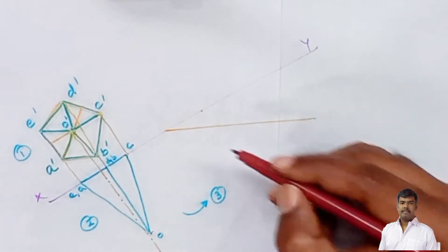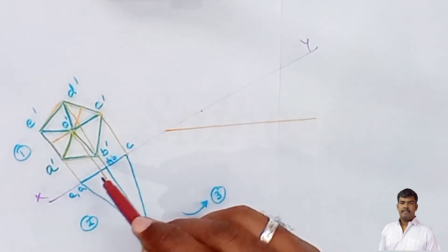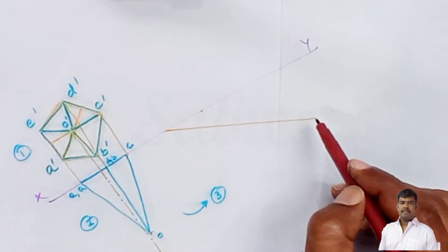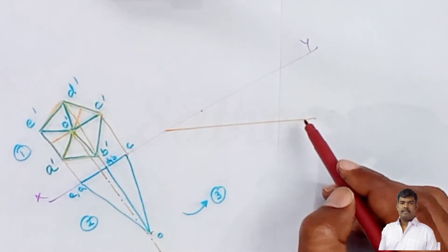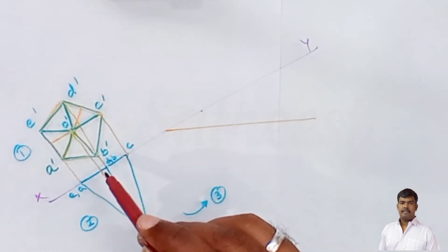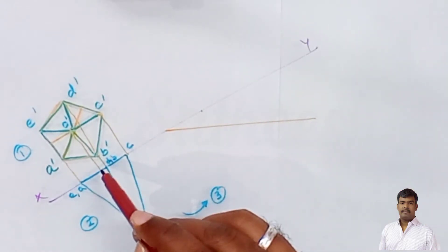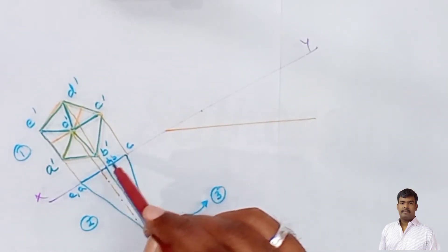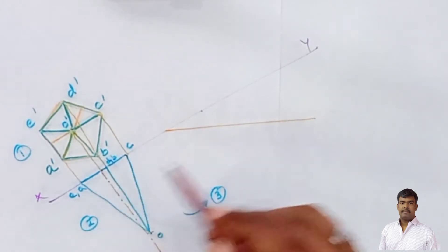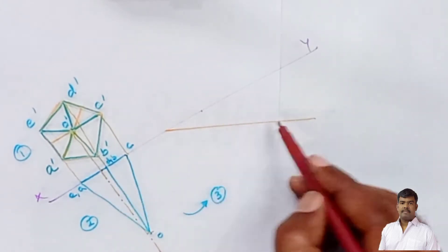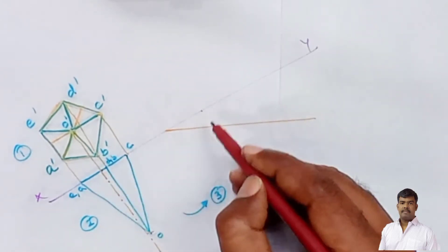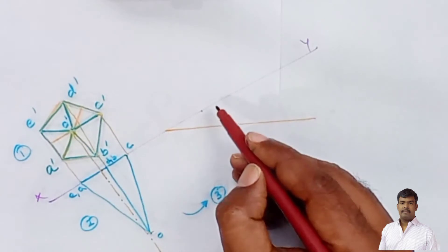The axis line is now inclined at 30 degrees. From the axis, measure the perpendicular distances. The distance from the perpendicular line of the axis — same distance — is transferred here. Mark the same distances from the inclined axis perpendicular.